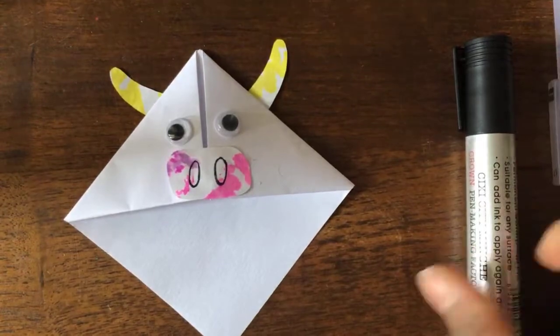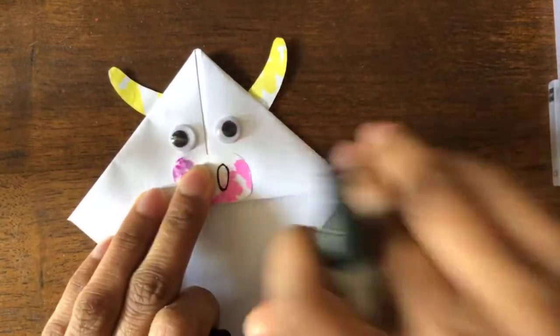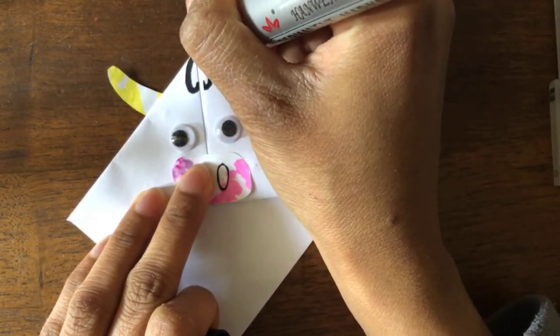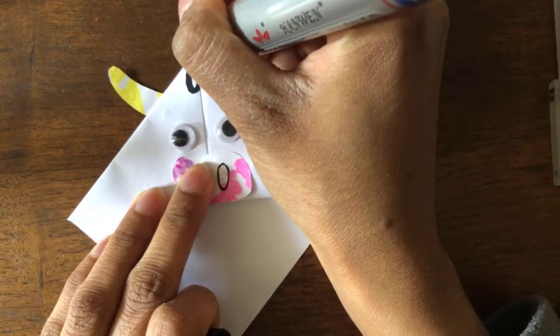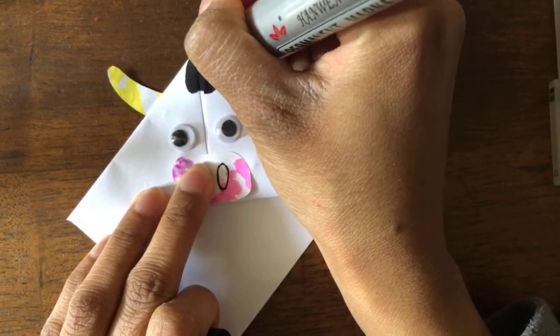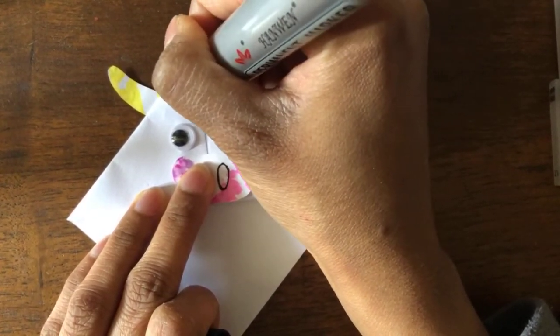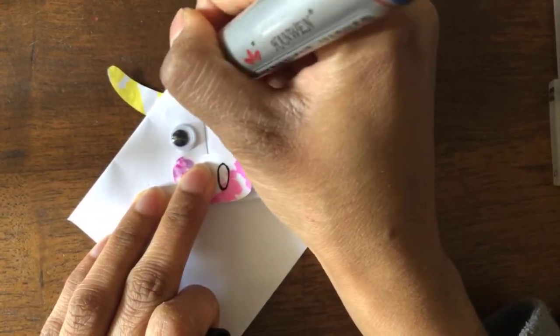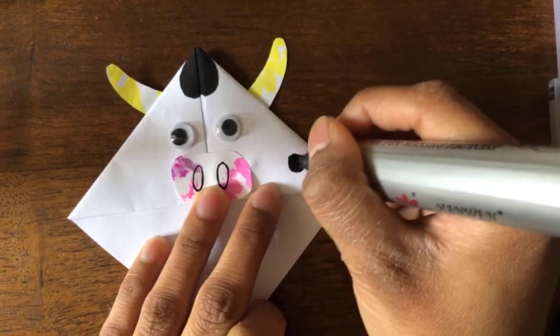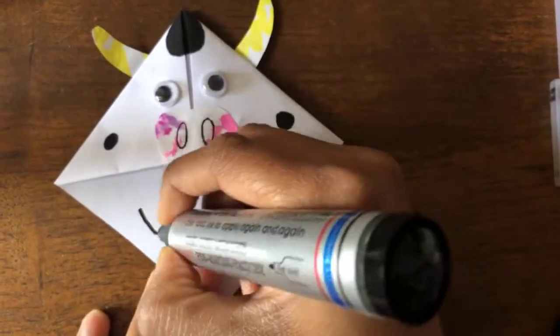Now I'll give my cow some spots. I'll put a heart shape here. I'll put one here. You can make whatever shape you like.